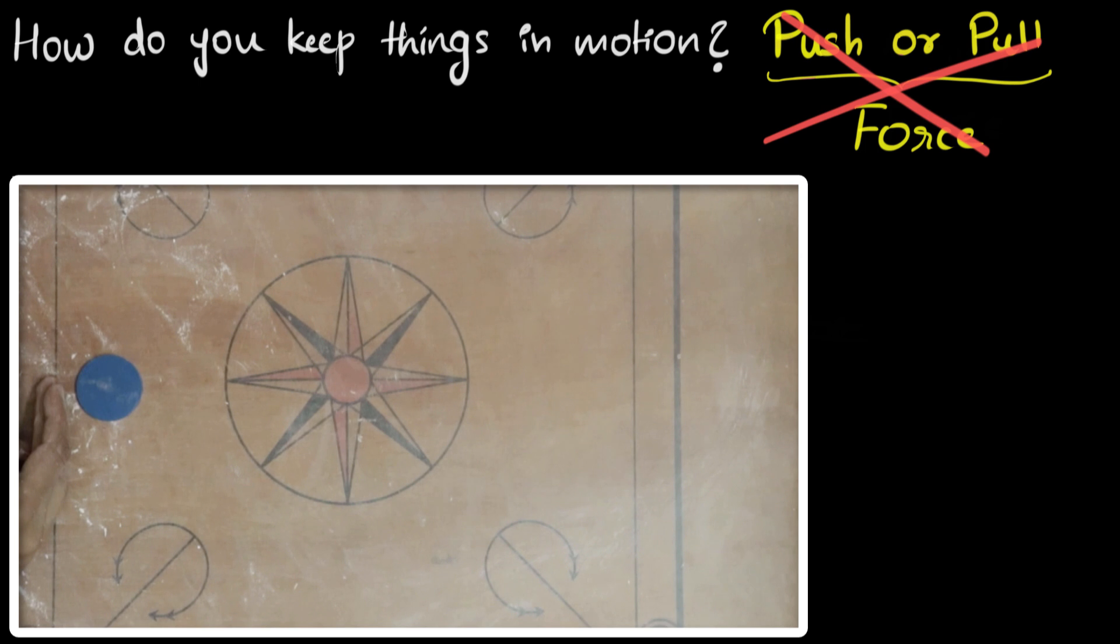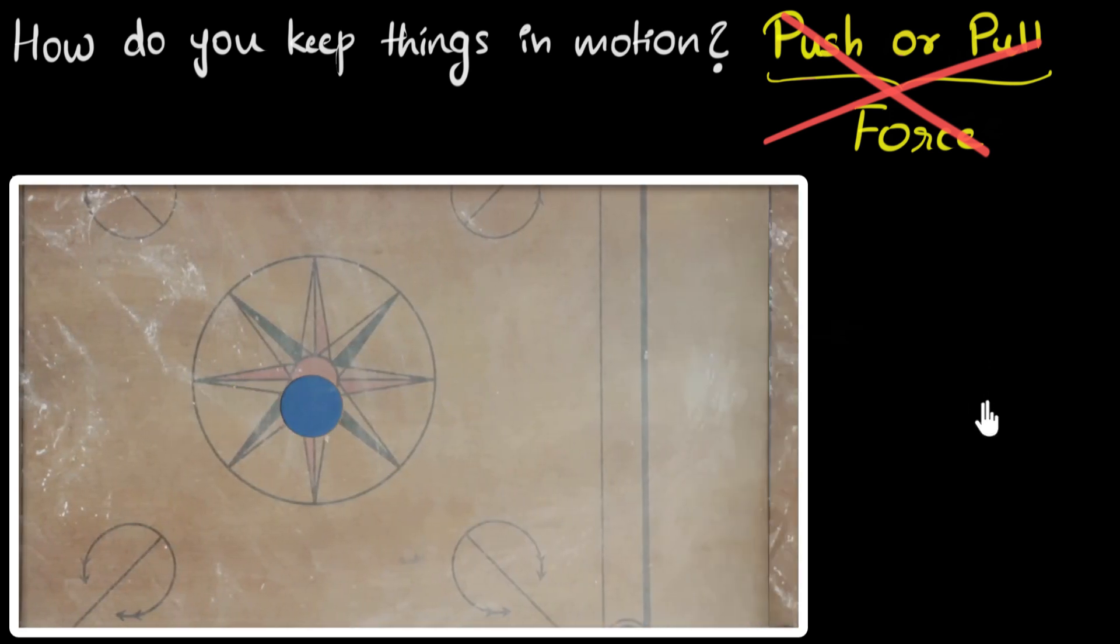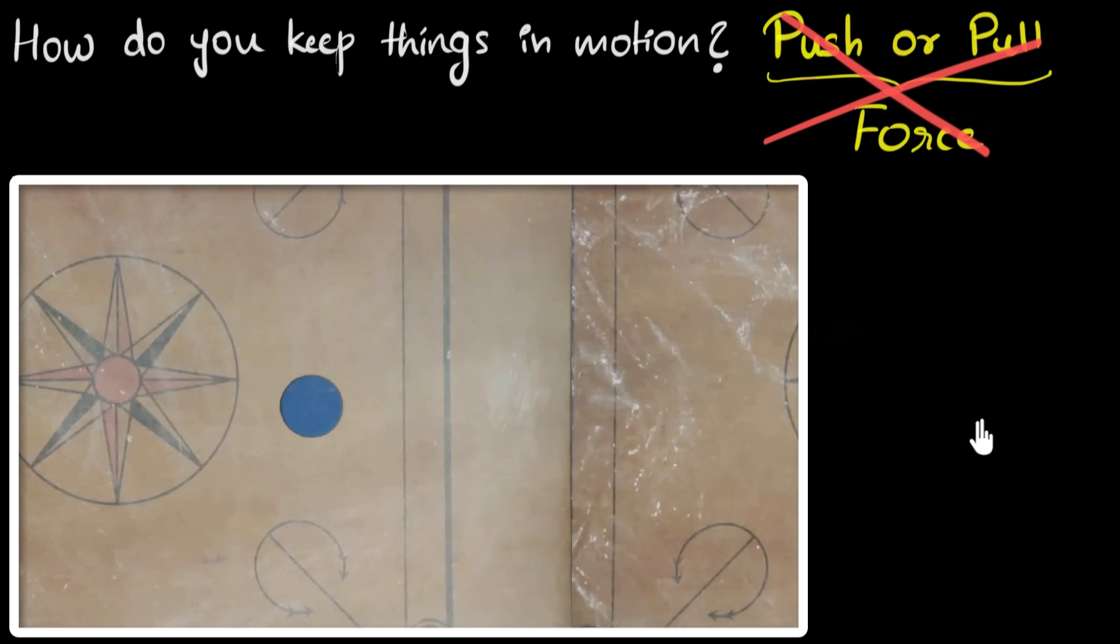Imagine we somehow made this board perfectly smooth and gave it a tap. What happens now? Well, now that our board is perfectly smooth, that coin will never stop. It will keep moving forever.